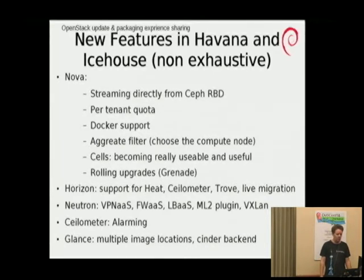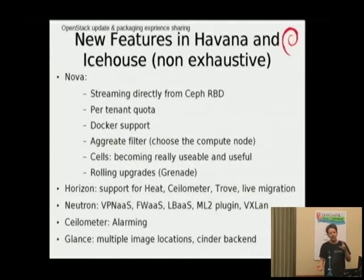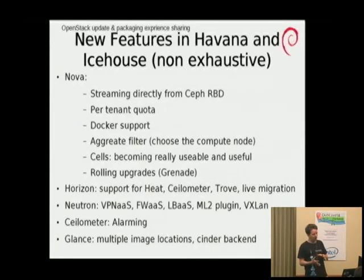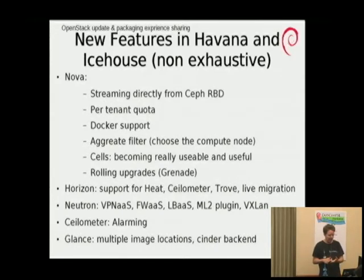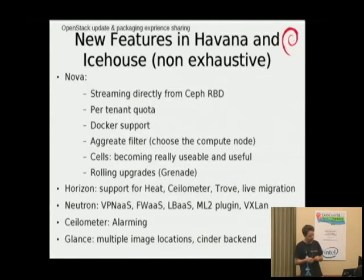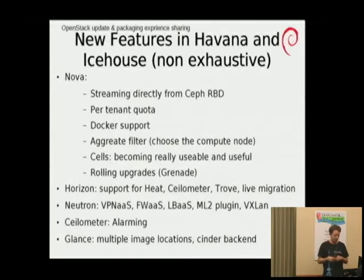Horizon now supports a lot more projects. It supports Heat, which provides auto-scaling features: you say 'when my web server has that many requests, I want more virtual machines.' You write that in a Heat template. Horizon has support for Heat, for Ceilometer which does metering in an OpenStack cloud, and for Trove, the Database as a Service. On the Neutron side — Neutron does networking — there are many new features like VPN as a Service, Firewall as a Service, and Load Balancer as a Service.